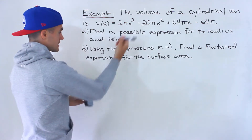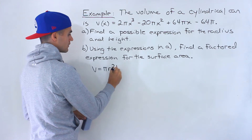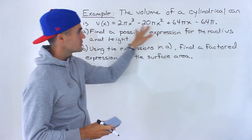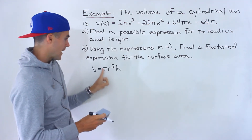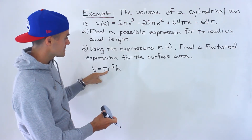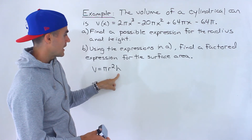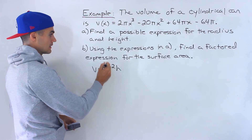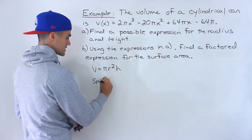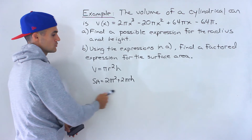This is a cylindrical can and the volume of a cylinder is πr²h, where r is the radius and h is the height. We need to take this volume expression and put it in that format. Once we factor it into that format, we can identify the radius and height, and then for part b find the surface area using 2πr² + 2πrh.